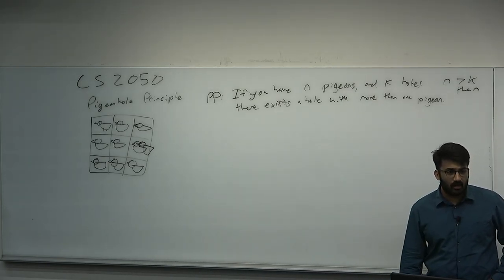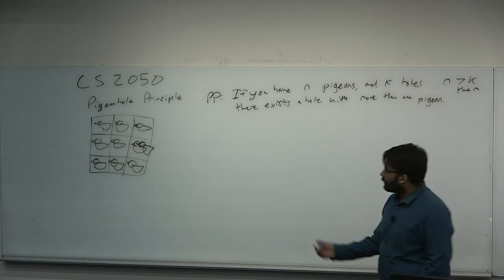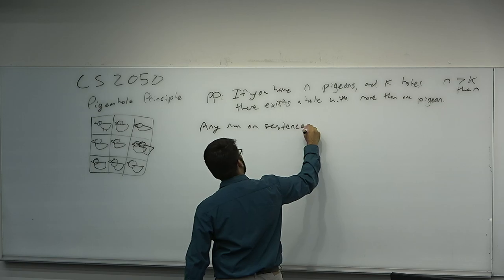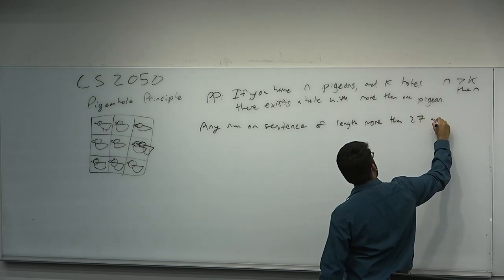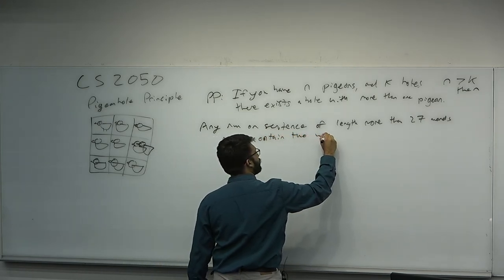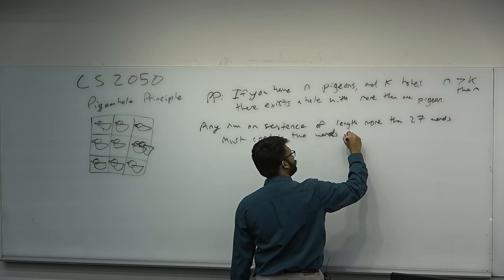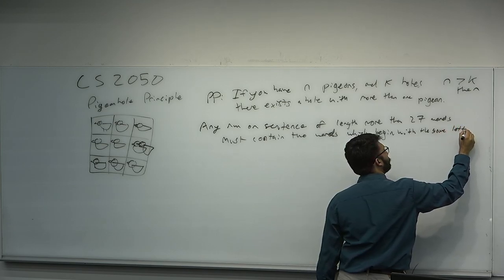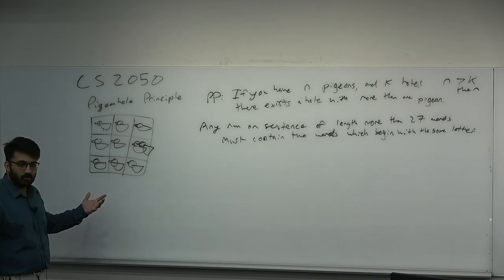The rest of today we'll be doing many problems with the Pigeonhole Principle so you can see how to use it — it's a tool. Here's one: any run-on sentence of length more than 27 words must contain two words which begin with the same letter. Now, what are the pigeons here? What are the holes? This is not obvious, so you always have to perform the mapping.